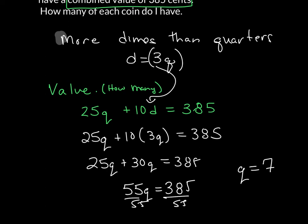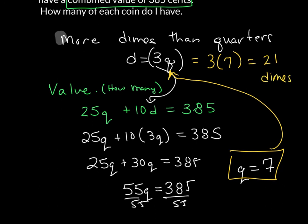Now to find out the number of dimes, I just take all of this and plug it back up here. And I know that is equal to 3 times the fact that there are 7 quarters, or that I have 21 dimes. And then you'll put both of those into the equation.